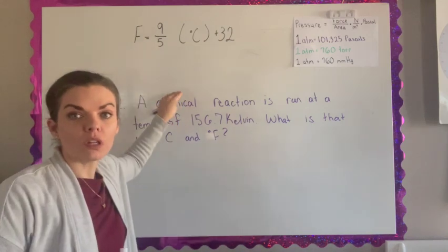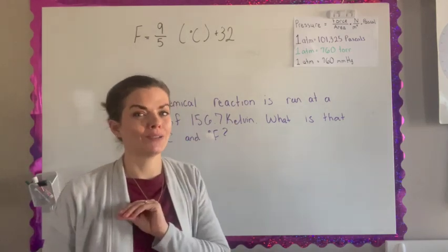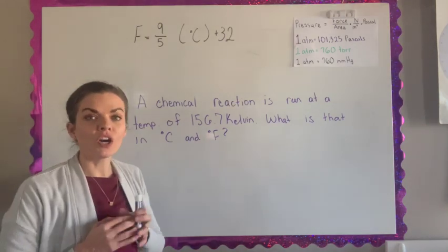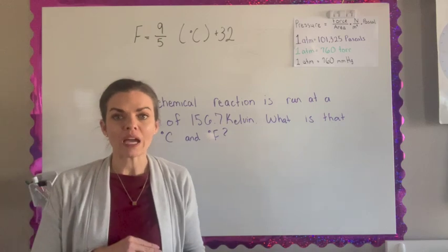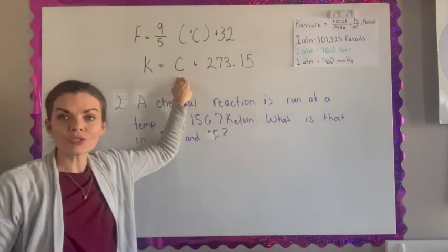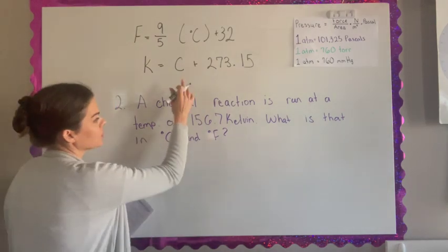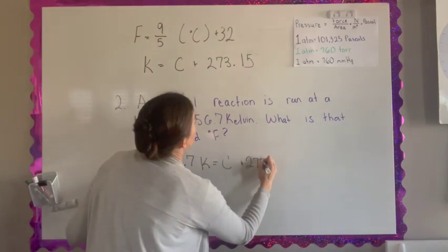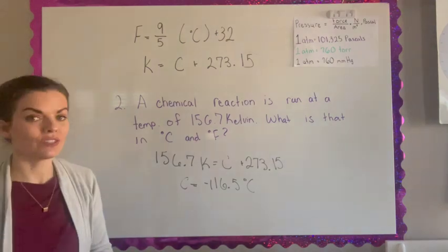I have rewritten the formula from Fahrenheit to Celsius. The question asks: a chemical reaction is run at a temperature of 156.7 degrees Kelvin. What is that in Celsius and in Fahrenheit? This is the formula for a Kelvin: Kelvin is just your degrees in Celsius plus 273.15. So that's kind of the easiest one to figure out. I'm just going to plug in my information and solve it for C. So the Celsius is negative 116.5 degrees Celsius.